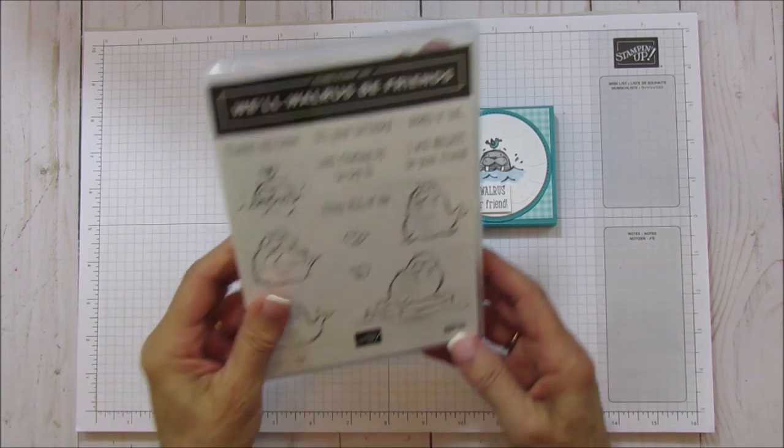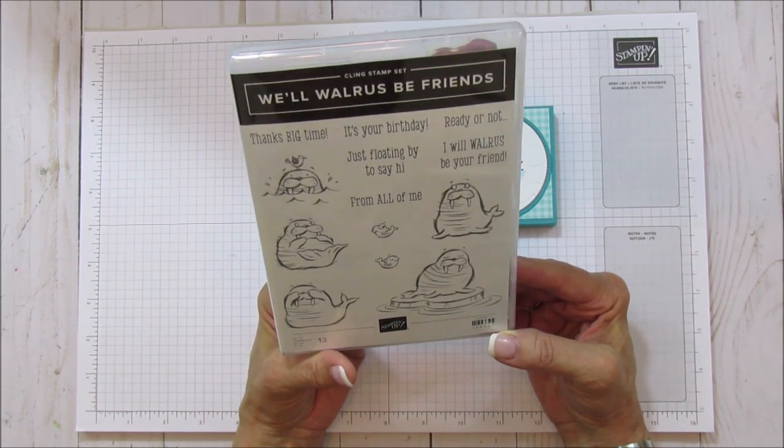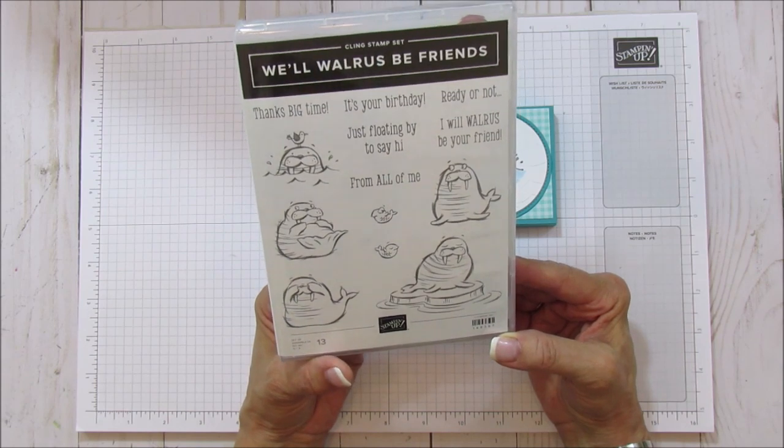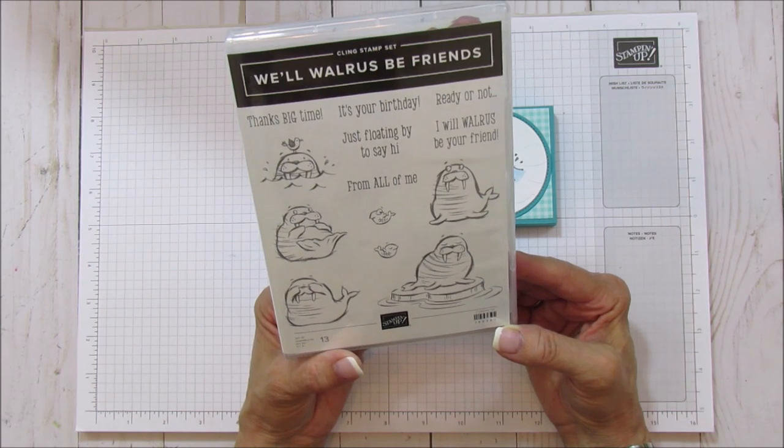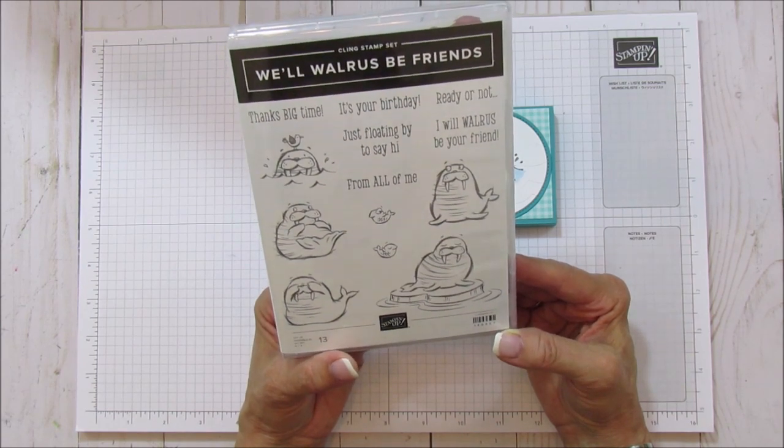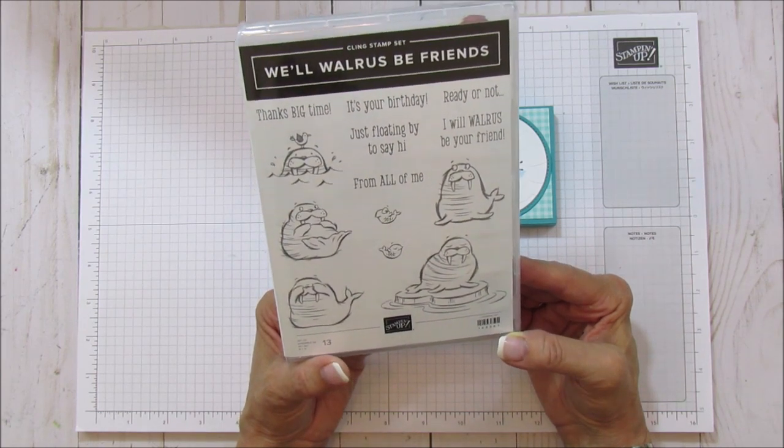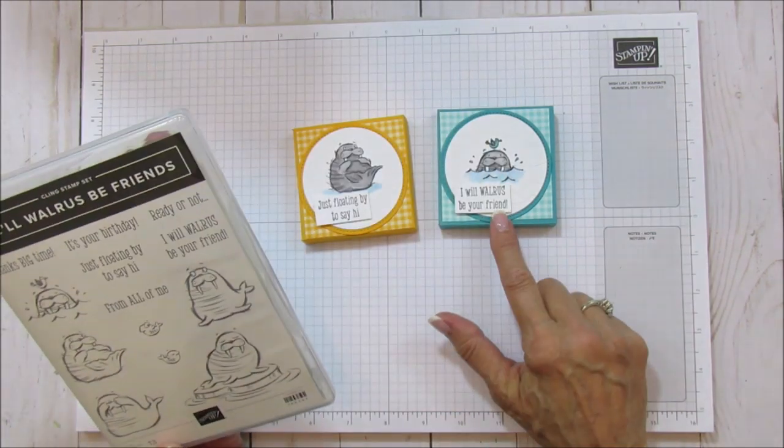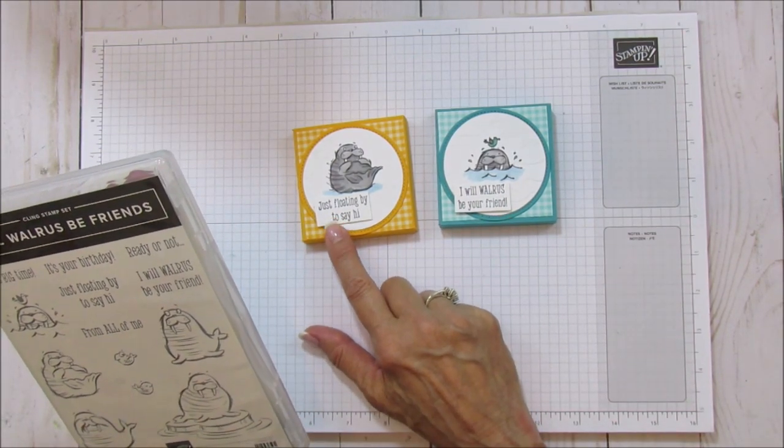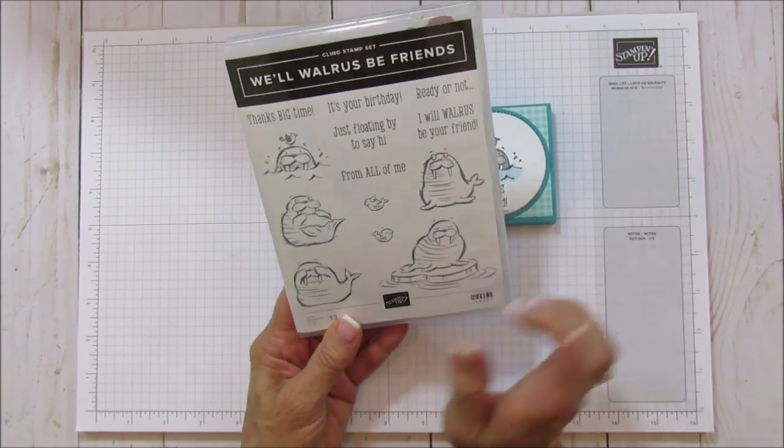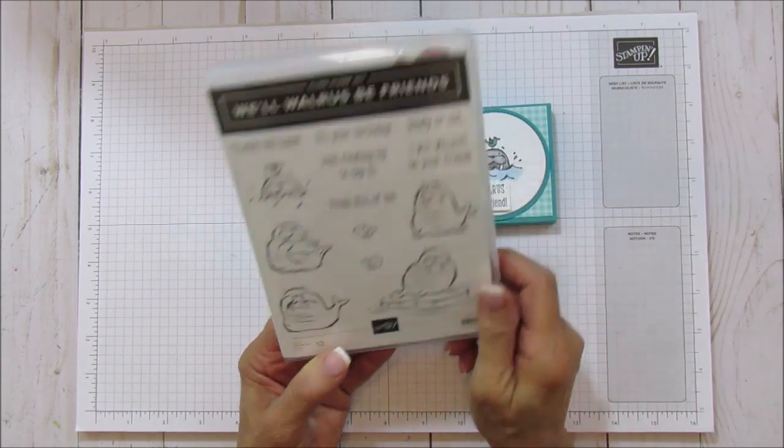The stamp set that I'm featuring is We'll Walrus Be Friends. I love this one. As soon as I saw it in the new Stampin' Up annual catalog, I had to have it. It's just so darling and it's very quick and easy coloring if you're not one that really likes to color. It goes super quick and it's got a lot of really good sentiments, a lot of big variety of sentiments. So in this one I used I will walrus be your friend, and then this one's just floating by to say hi, and then today we're gonna do it's your birthday, and I'm gonna use this little guy right here for that one.